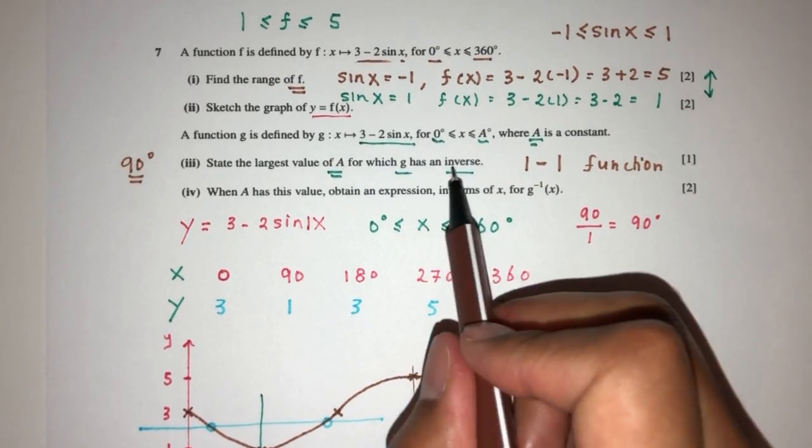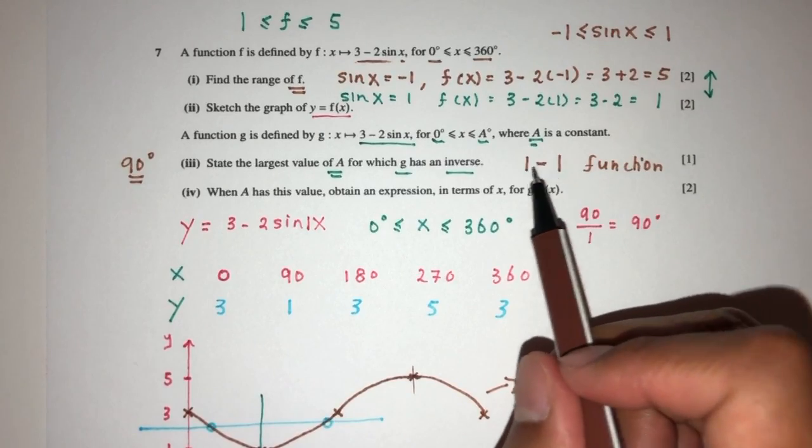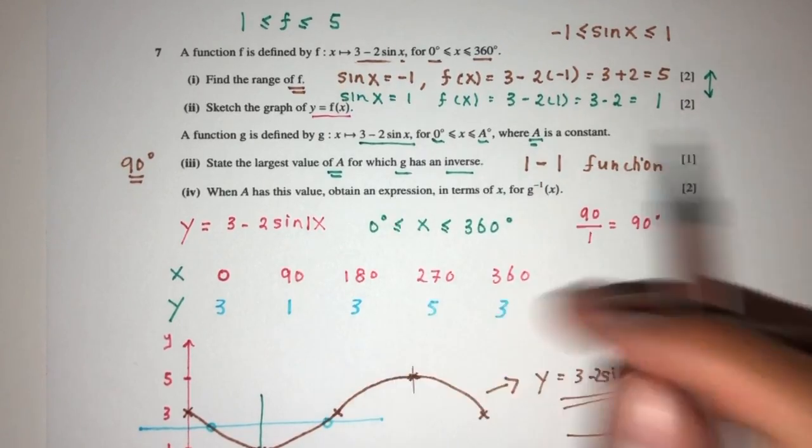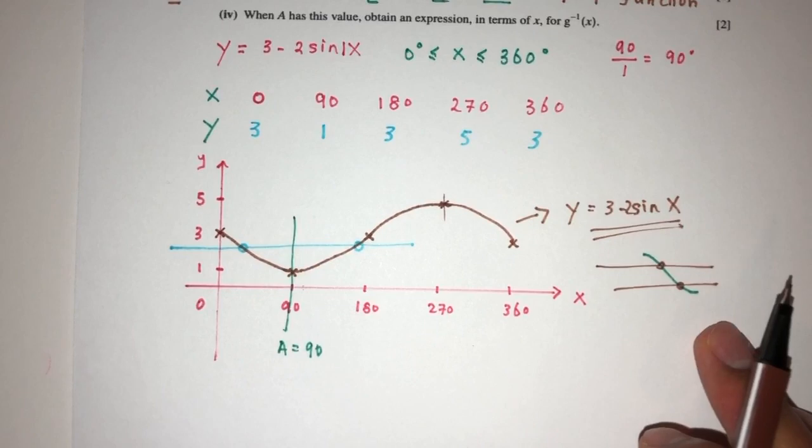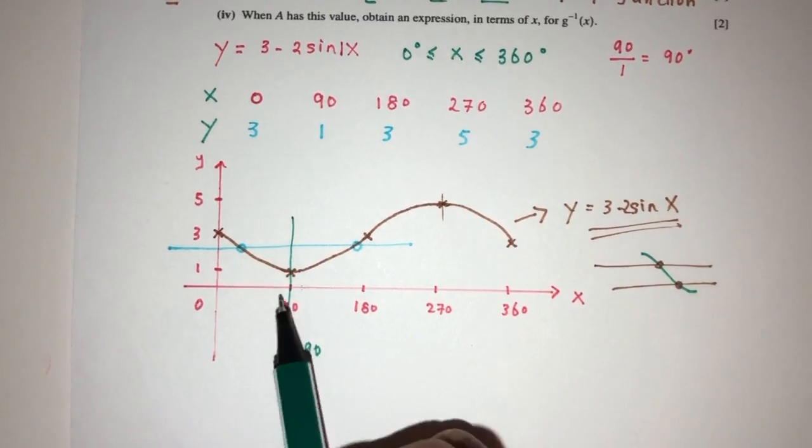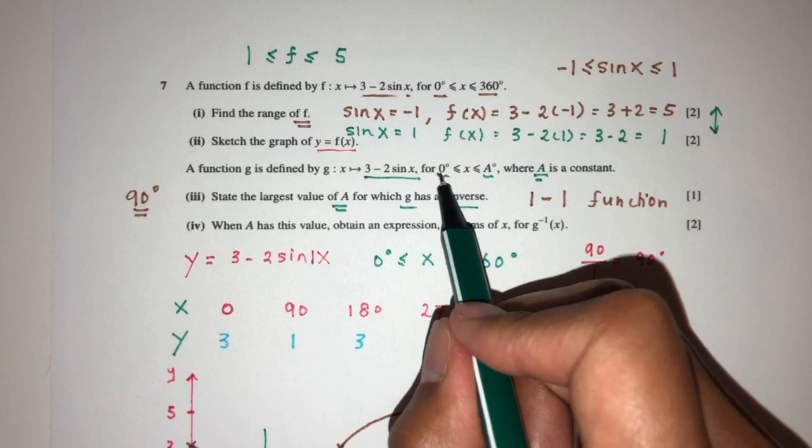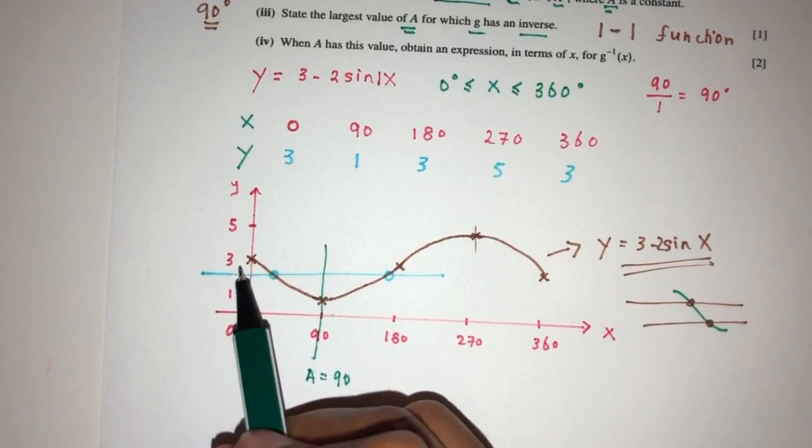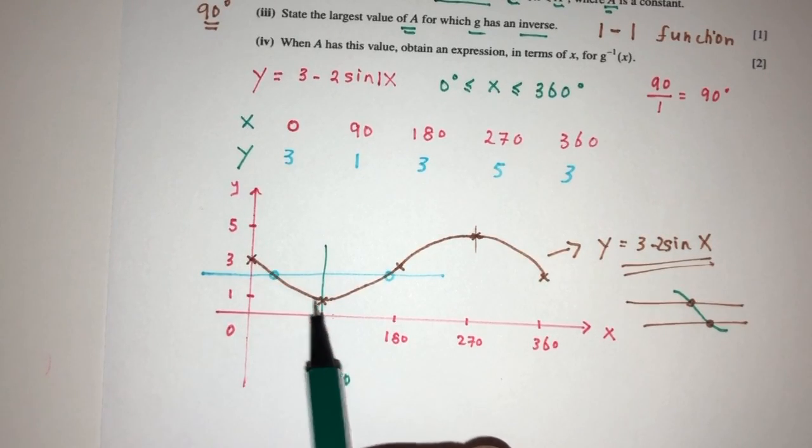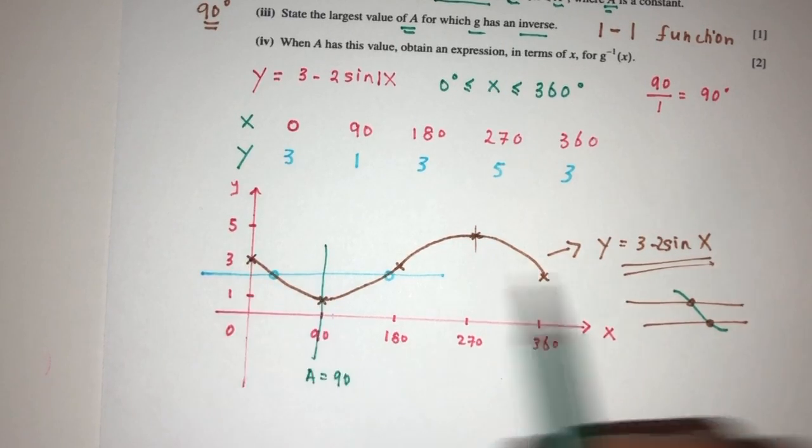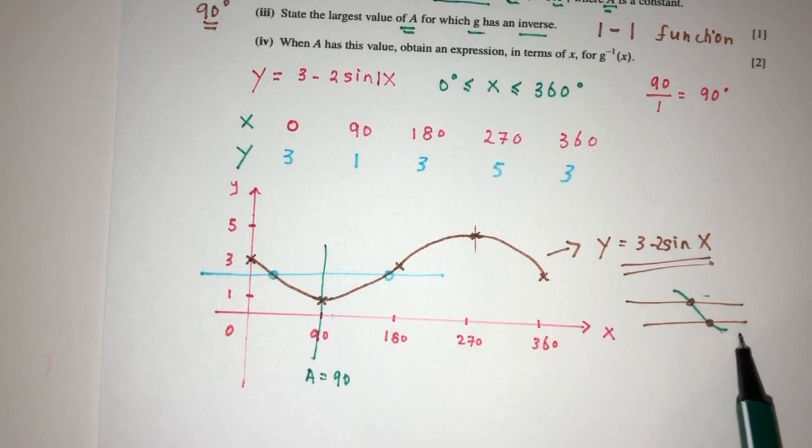Now, for which has an inverse, obviously we know that only a one-to-one function can have an inverse. That's why we have to show this. And then we realize that because x values begin from zero, so we have to look from zero, keep going on, until 90, we can have an inverse, because from this point to this point, it has a one-to-one function. That will be your question for part three.